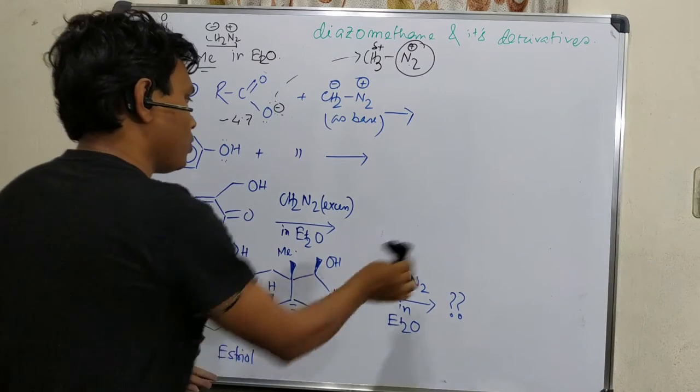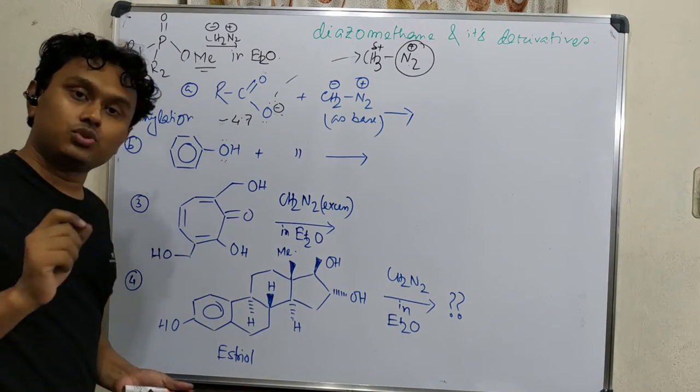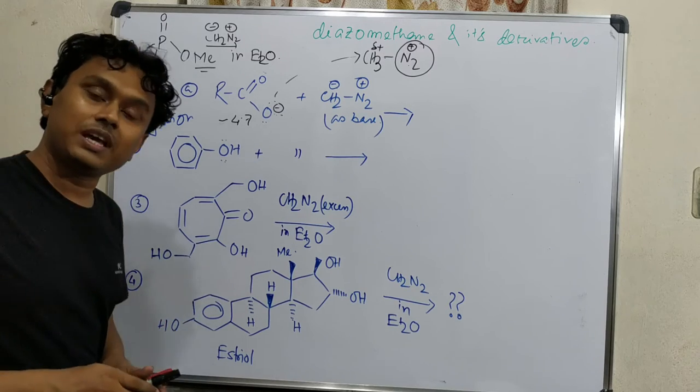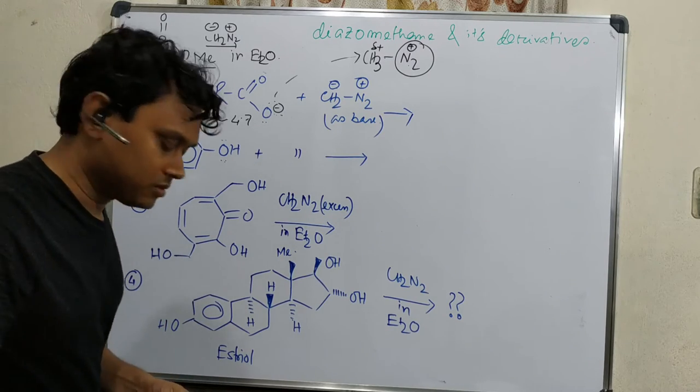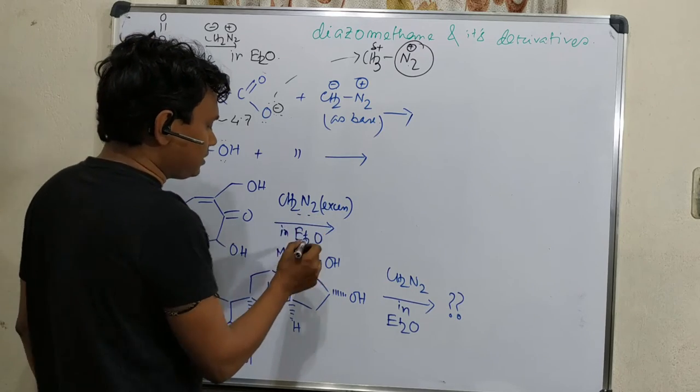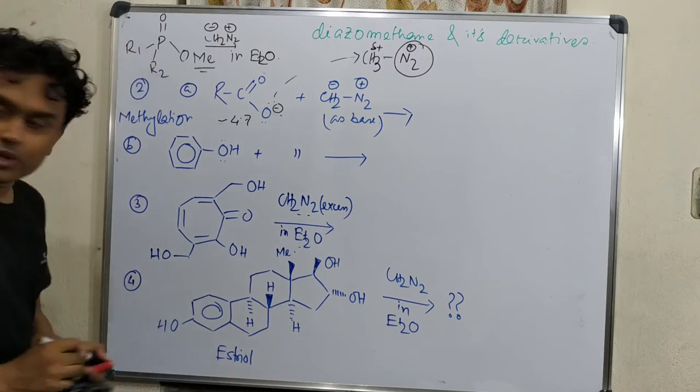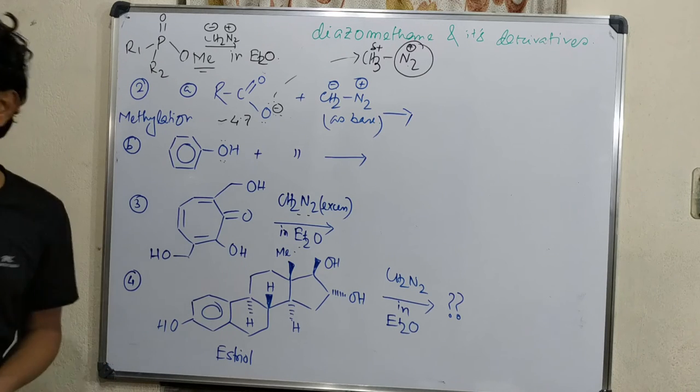Now let's discuss some difficult examples. Examples three and four, I suggest you look at carefully because such type of examples could be given in exam for a two marks question. Here diazomethane is given in ether and that is in excess. The question is what will be produced after this reaction?